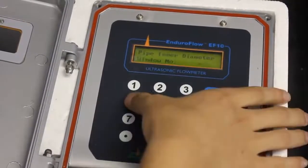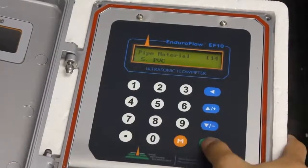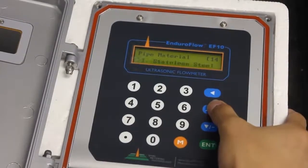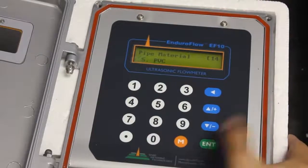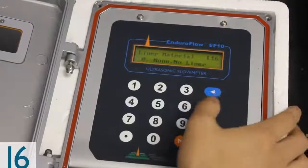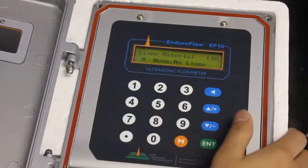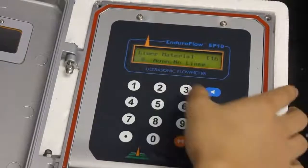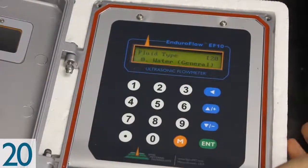Next we go to menu 14 to set the material. We're going to be using PVC today, but we have quite a few selections here. As you can see we press PVC. Next menu 16 is to set the liner material. If you have any liner you would set it, but we are not using any liner today. Menu 20 is a fluid type. We're using water.